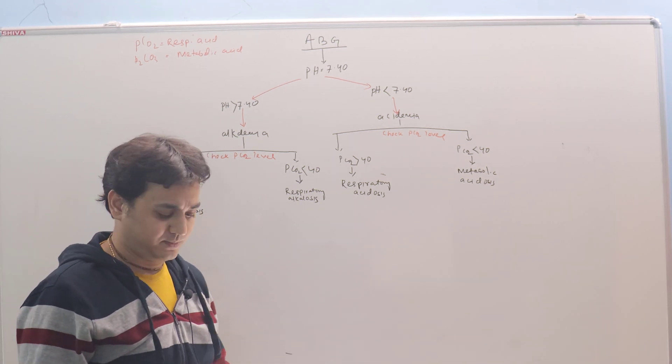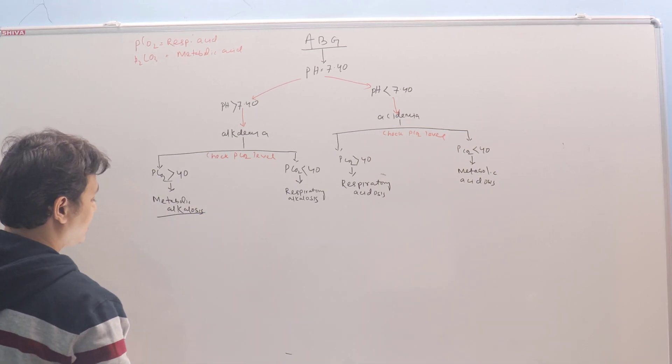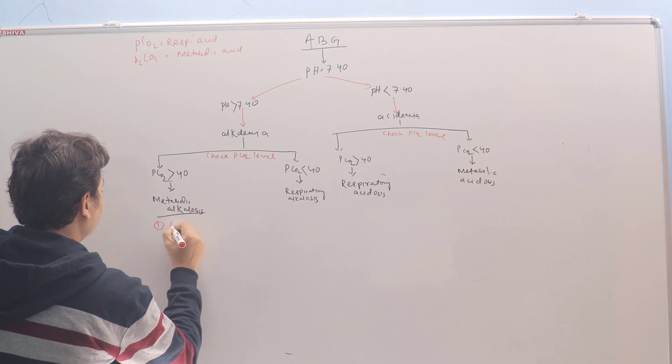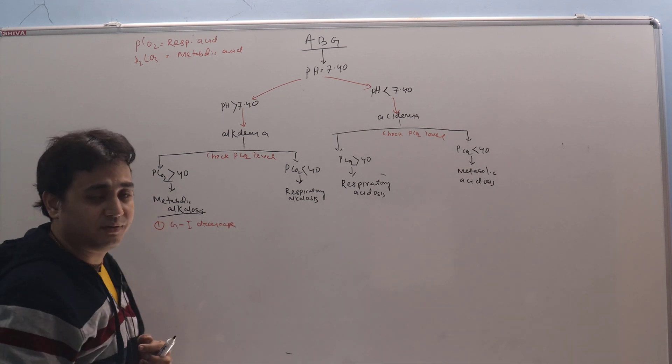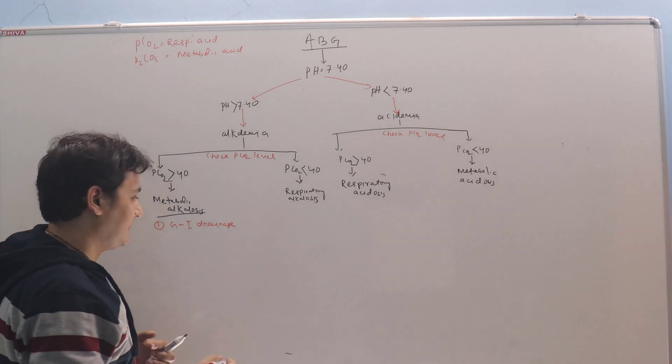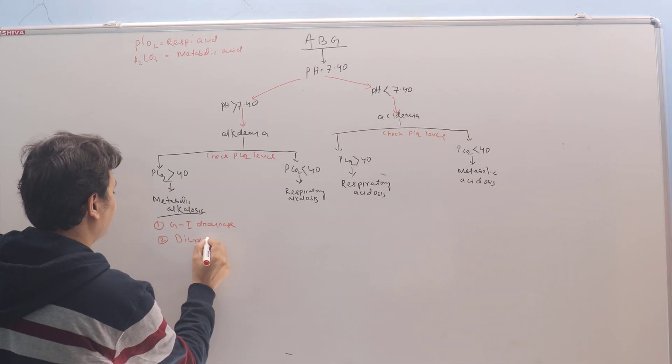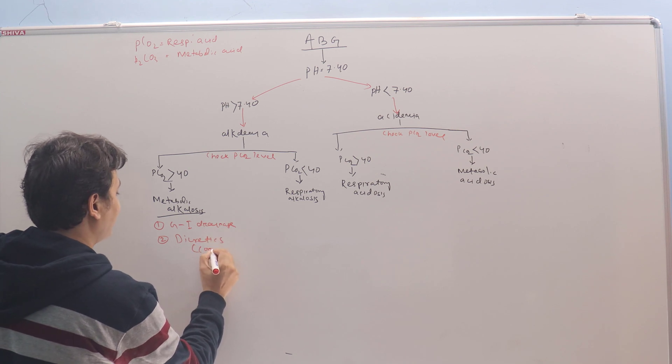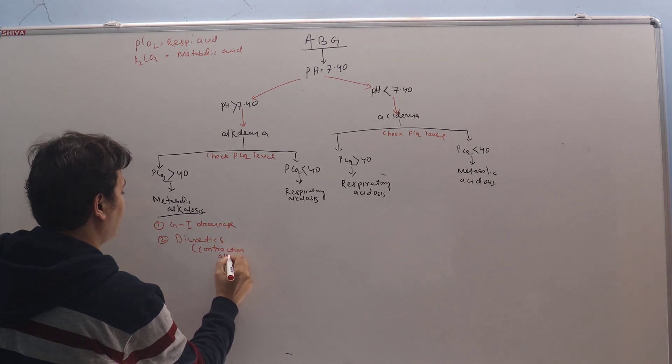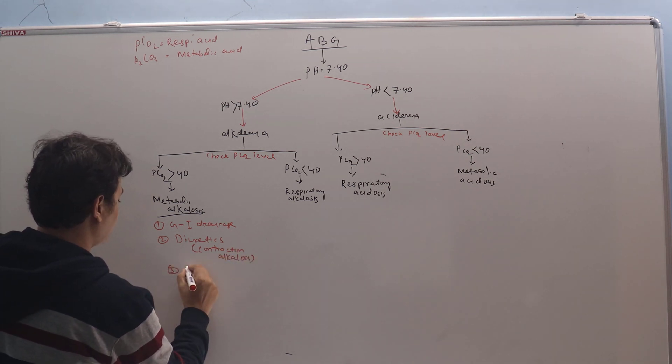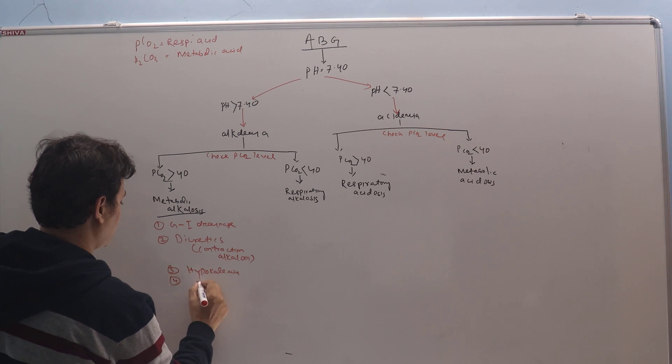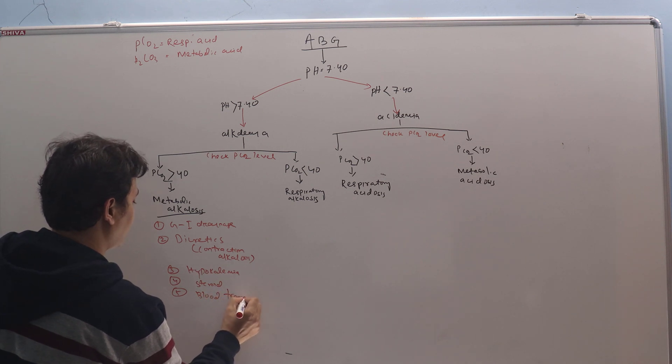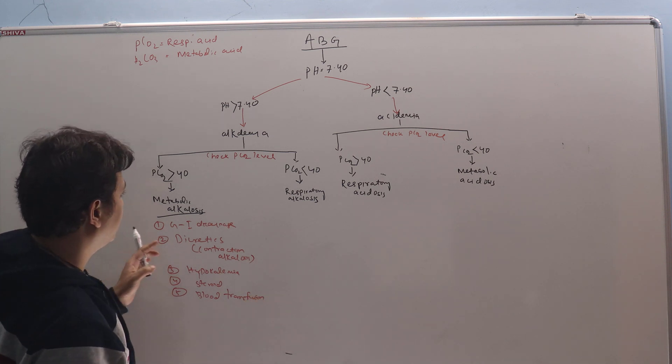So for metabolic alkalosis, what are the common causes in ICU? Number one will be gastrointestinal drainage, acid-rich drainage. If it is there then it will produce an alkalosis. Second is diuretics, popularly called contraction alkalosis. Third is hypokalemia. Fourth is steroids. Fifth is blood transfusion. It contains citrate. The citrate will be metabolized to bicarbonate. It will produce alkalosis.